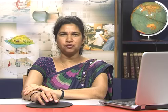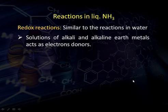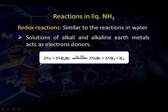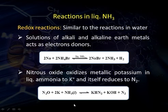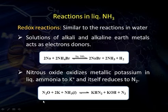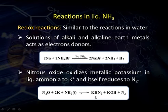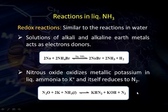Redox reactions in liquid ammonia are similar to those in water. Solutions of alkali and alkaline earth metals act as electron donors. For example, sodium plus ammonia bromide in liquid ammonia gives sodium bromide plus hydrogen. Nitrous oxide (N₂O) oxidizes metallic potassium in liquid ammonia to potassium ion, forming KNH₂ and KOH, while nitrogen is reduced to N₂ (oxidation state 0).